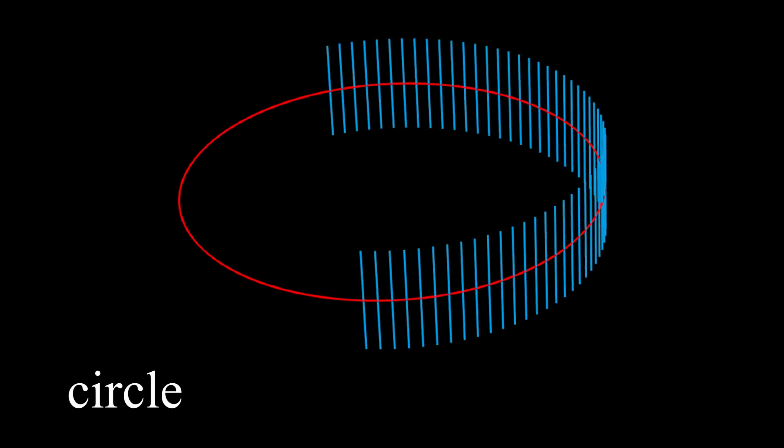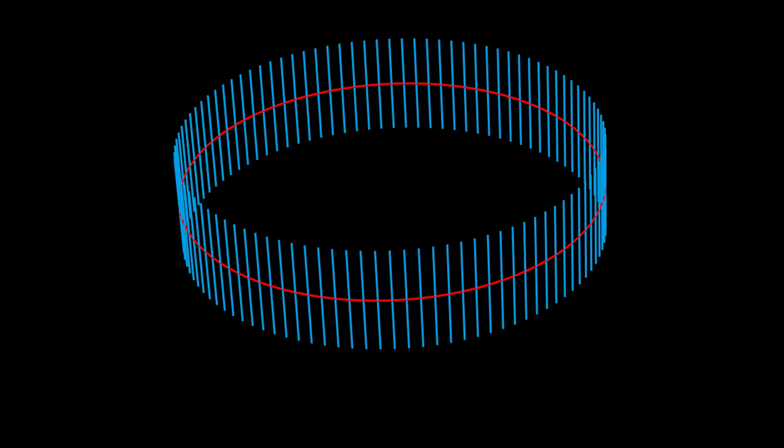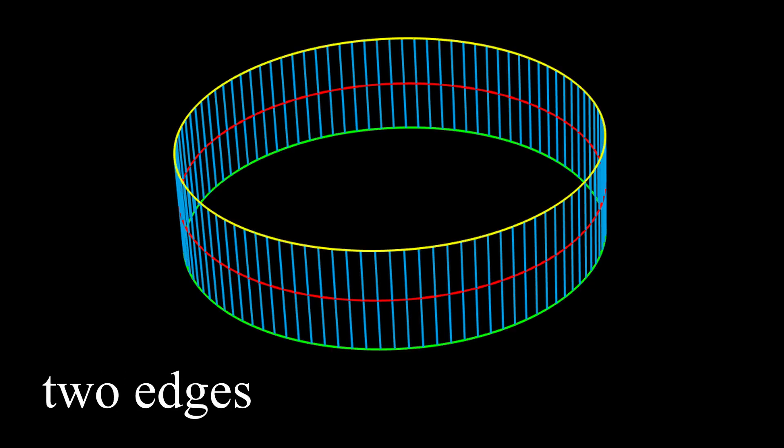To construct a Mobius strip on the computer, first create a cylinder. Draw a circle and affix the centers of evenly spaced upright toothpicks around the circle's circumference. If you think of the toothpicks as forming a smooth surface, then you have a cylinder. The cylinder has two edges formed by the two ends of the toothpicks — the yellow edge at the top and the green edge at the bottom.